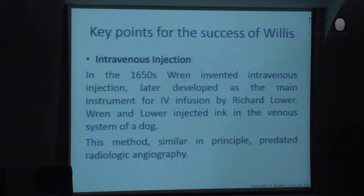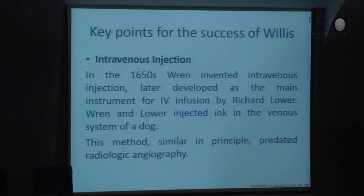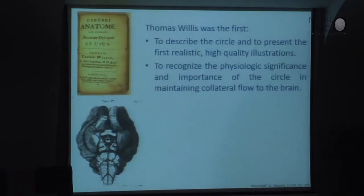Another important point is the intravenous injection. In 1650, Wren invented the intravenous injection. This was later developed as a main instrument for intravenous infusion, but during that period Wren injected ink into the venous system of dogs, and this method permitted him to follow the blood vessels in a very different manner — also a breakthrough step. So finally, Thomas Willis was the first to describe the circle and present the first realistic high-quality illustration, and the first to recognize the physiologic significance of the circle in maintaining collateral flow of the brain.